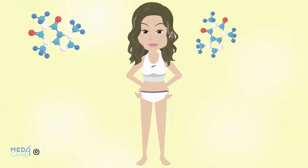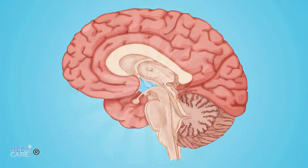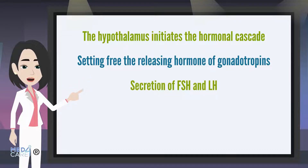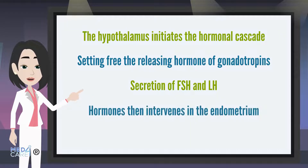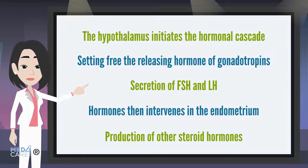The calibrated balance of several hormones, which intervene in specific ways in different anatomical areas, physiologically triggers the menstrual cycle. In detail, the hypothalamus initiates the hormonal cascade, setting free the releasing hormone of gonadotropins, which acts on the pituitary gland for the secretion of two important hormones: follicle-stimulating hormone (FSH) and luteinizing hormone (LH). The action of these two hormones then intervenes in the endometrium to promote the production of other steroid hormones, such as estrogen and progesterone.